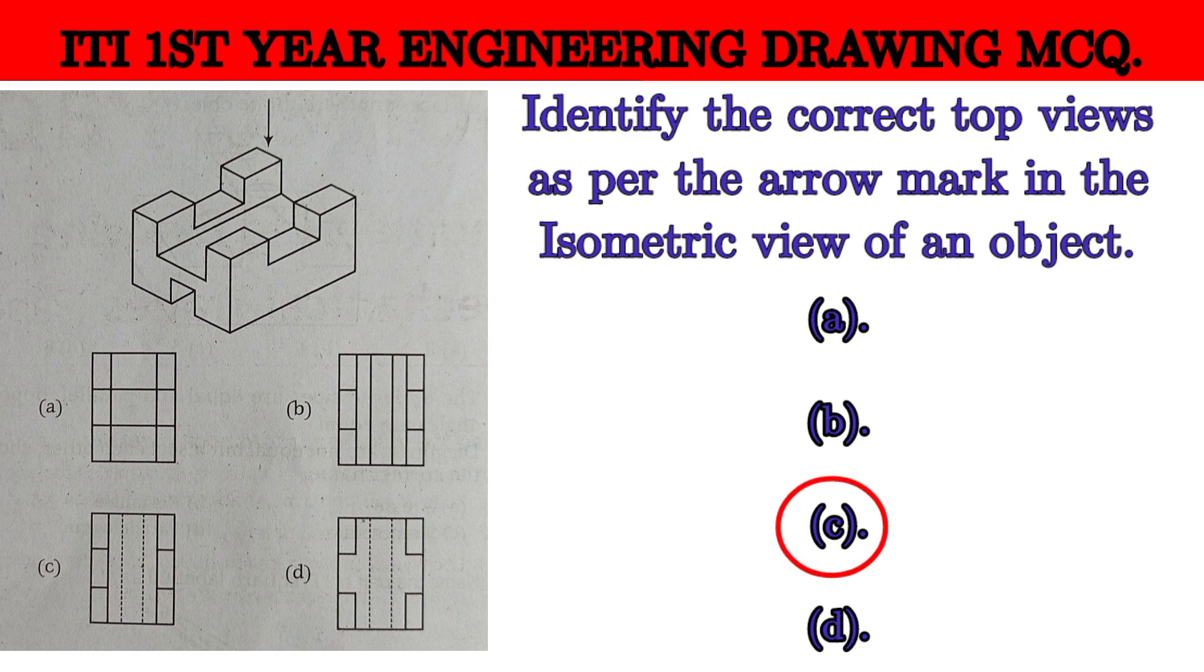The first question is to identify the correct top view as per the arrow mark in the isometric view of an object. Which view is correct? You can see the different colors marked. Click the correct answer.